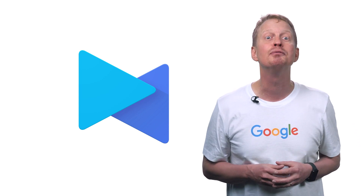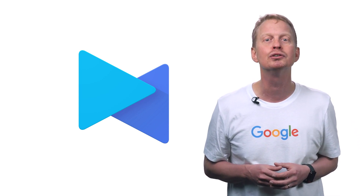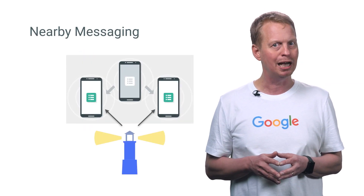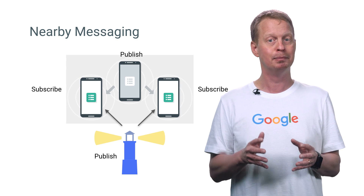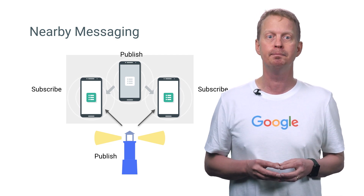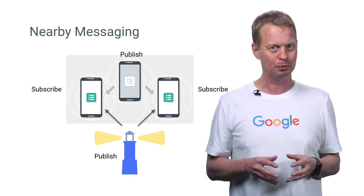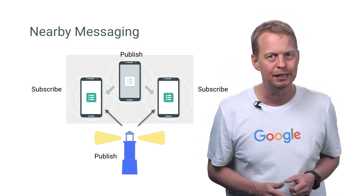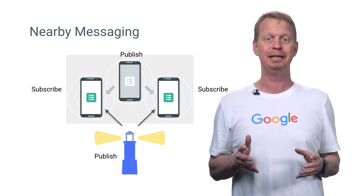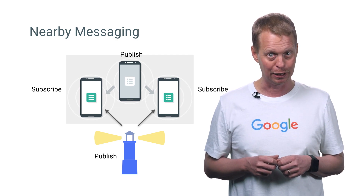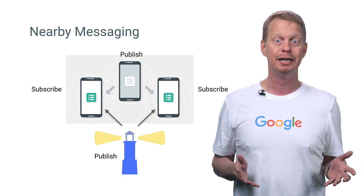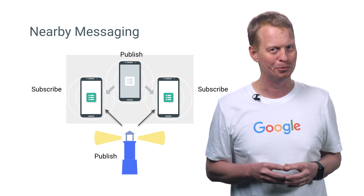And you get even more with this release, because we also have important announcements for the Nearby API. Remember the Nearby Publish-Subscribe architecture, which allows your app to detect and retrieve data from beacons? Well, in this release we've enhanced this capability so your app does not have to be in the foreground to detect a beacon. You can now get notified when a beacon is nearby, even when your app is in the background. Check out the release blog post for more information.